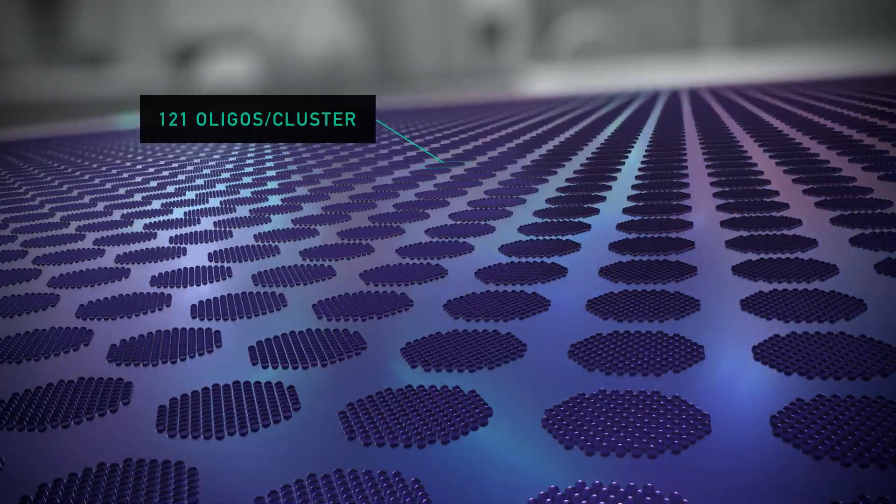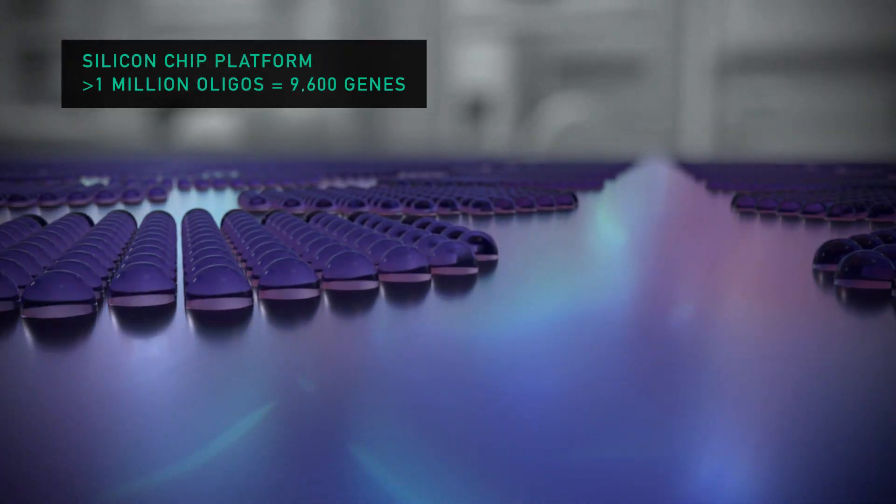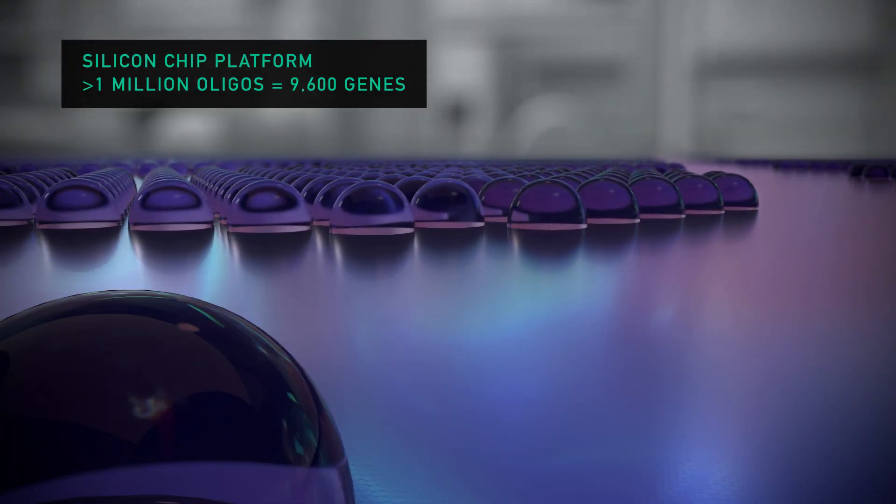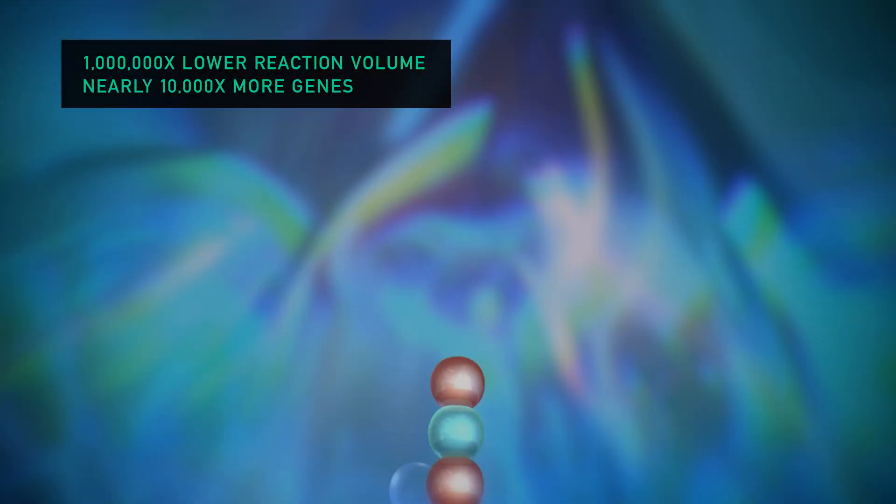With micro-scale patterning, the resulting silicon chip is able to write over 1 million oligonucleotide sequences to generate nearly 10,000 genes at a time.